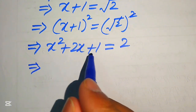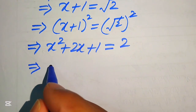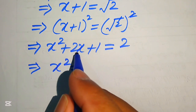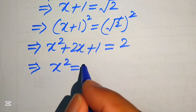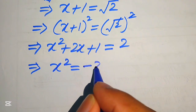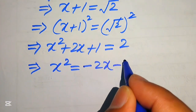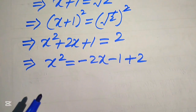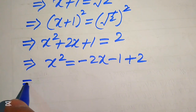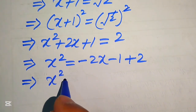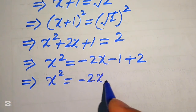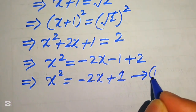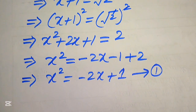We move the 2x and 1 to the right-hand side: x squared equals minus 2x plus 1. We call this Equation 1. We are solving for x to the power of 8, so we will use this equation in subsequent steps.